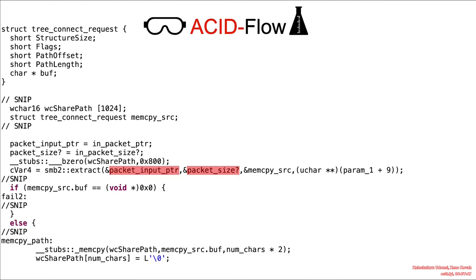Tracing the ACID flow. The packet input pointer points to the packet received over the wire, which would eventually be written into the memcopy source by SMB2 extract.